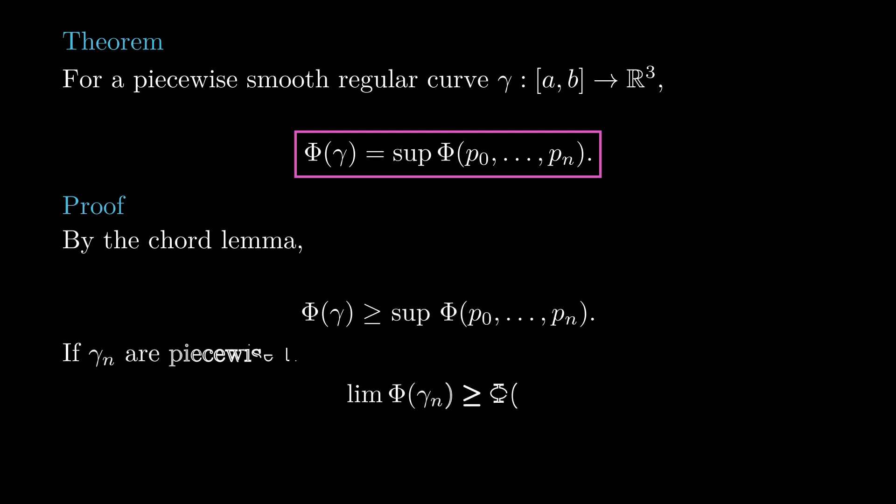The other one follows by taking a sequence gamma n of piecewise linear curves inscribed in gamma obtained from finer and finer partitions. I'll leave it to you to check that the sequence of tangent indicatrices of gamma n converges pointwise to the tangent indicatrix of gamma. By the lower semi-continuity of length, that implies that the total curvature of gamma is at most the limit of the total curvatures of the curves of the sequence. The theorem is recovered by combining these two equations.